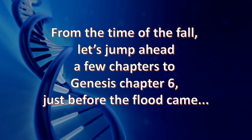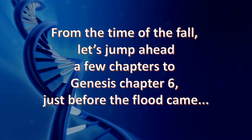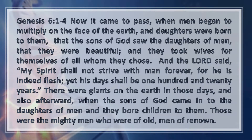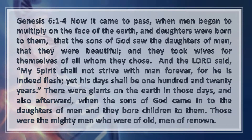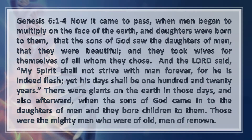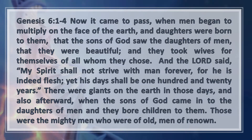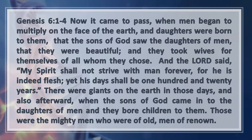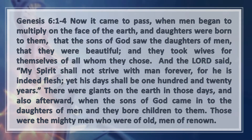From the time of the fall, we need to jump ahead to Genesis chapter 6, to the time just before the flood came. Genesis chapter 6 begins by saying, 'Now it came to pass, when men began to multiply on the face of the earth and daughters were born to them, that the sons of God saw the daughters of men, that they were beautiful, and they took wives for themselves of all whom they chose.' The Lord said, 'My spirit will not strive with man forever, for he is indeed flesh; yet his days shall be one hundred and twenty years.' There were giants on the earth in those days, and also afterward, when the sons of God came into the daughters of men and they bore children to them — those were the mighty men of old, men of renown. This passage is explaining the condition of the world that led up to the flood, as the next few verses explain.